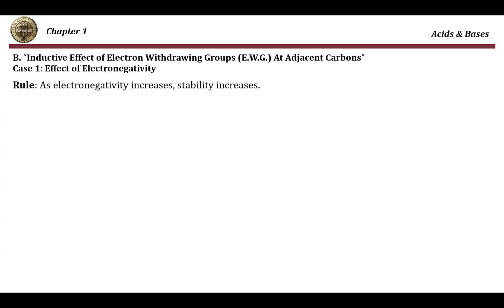In this video I will continue to discuss the different factors that affect the strength of acids, mainly discussing the inductive effect of electron withdrawing groups at adjacent carbons. The first case is the effect of electronegativity. As the electronegativity of the adjacent elements increases, the stability of the conjugate base will increase because these highly electron-withdrawing elements remove electrons, shifting electron density toward their side, thereby increasing stability at the anionic part.